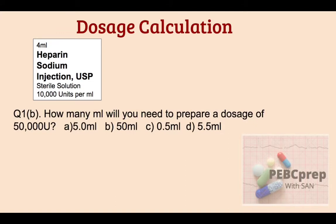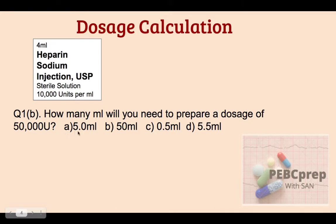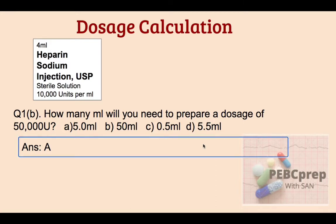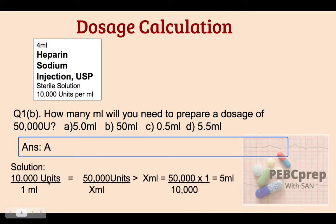Next question with the same label: how many milliliters will you need to prepare a dosage of 5,000 units? We have 10,000 units per ml. The options are: a) 5.0 ml, b) 50 ml, c) 0.5 ml, d) 5.5 ml. The answer is c, 0.5 milliliters. Solution: if 10,000 units are in 1 ml, then 5,000 units divided by 10,000 = 0.5 ml.